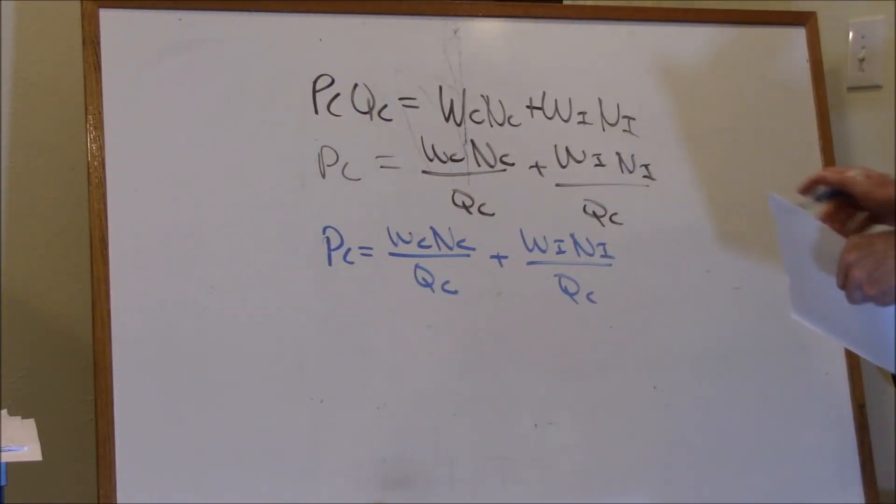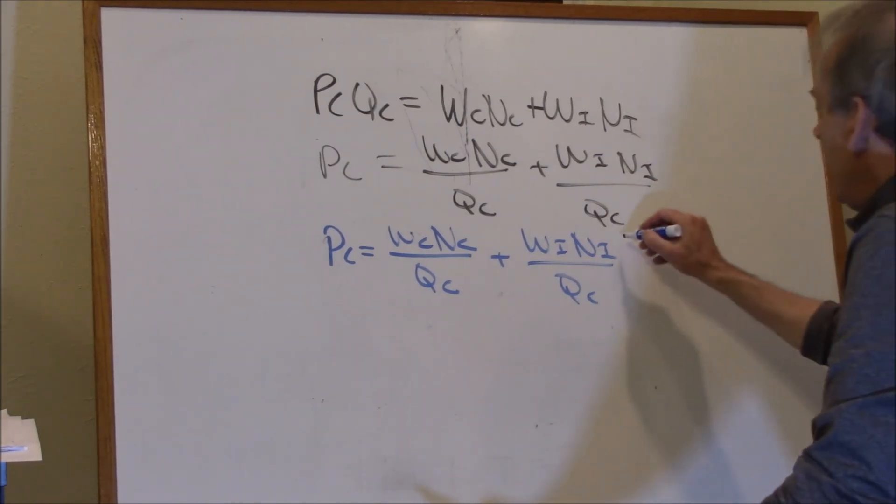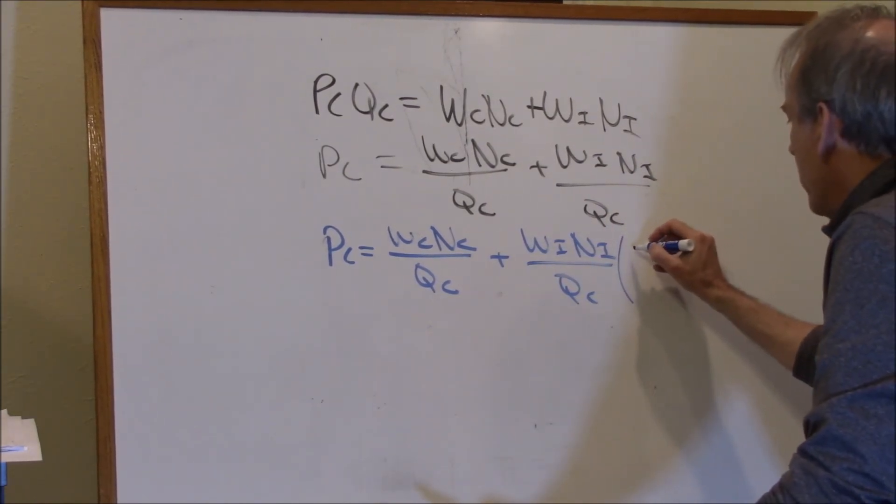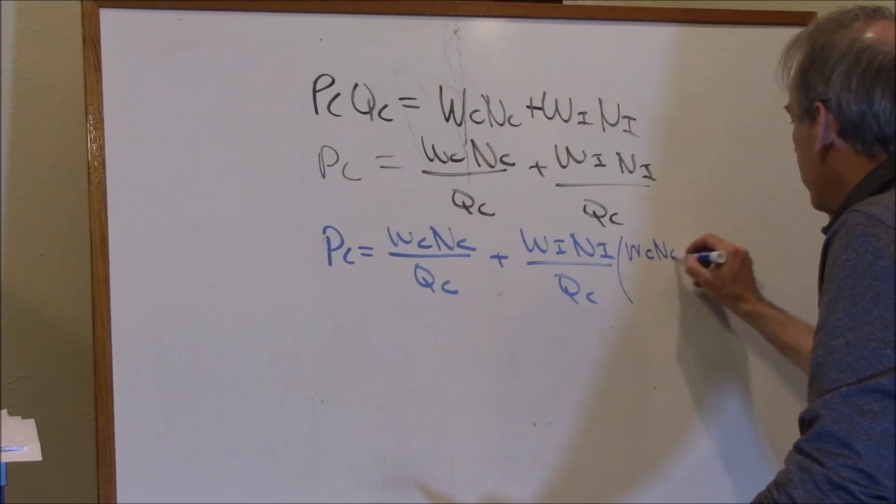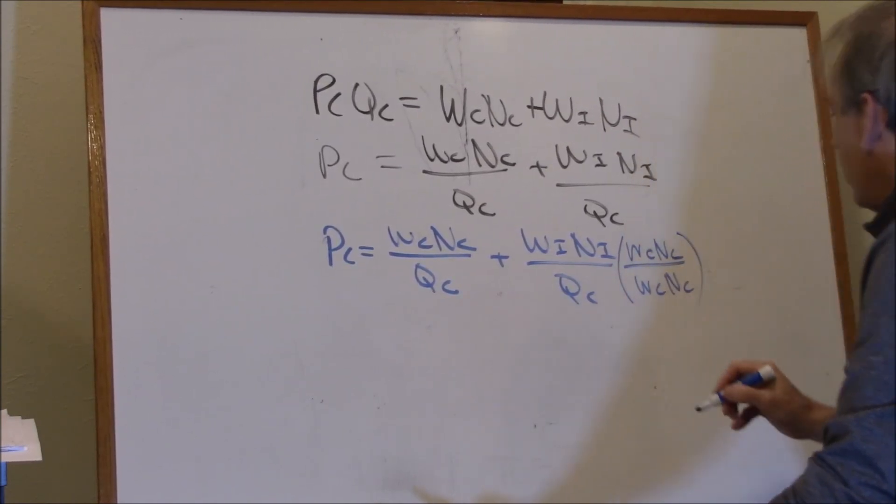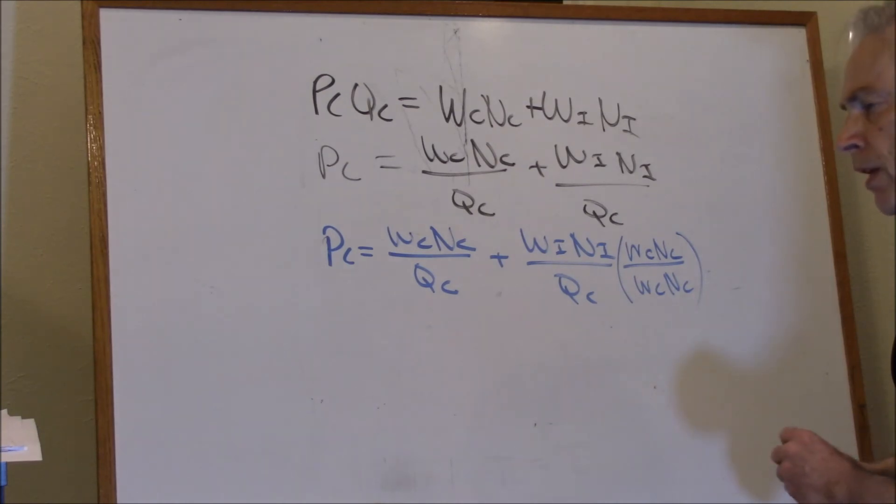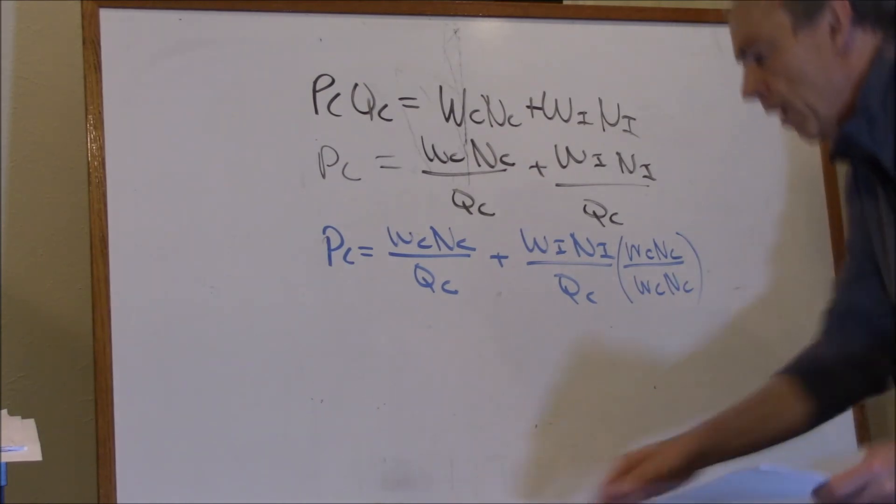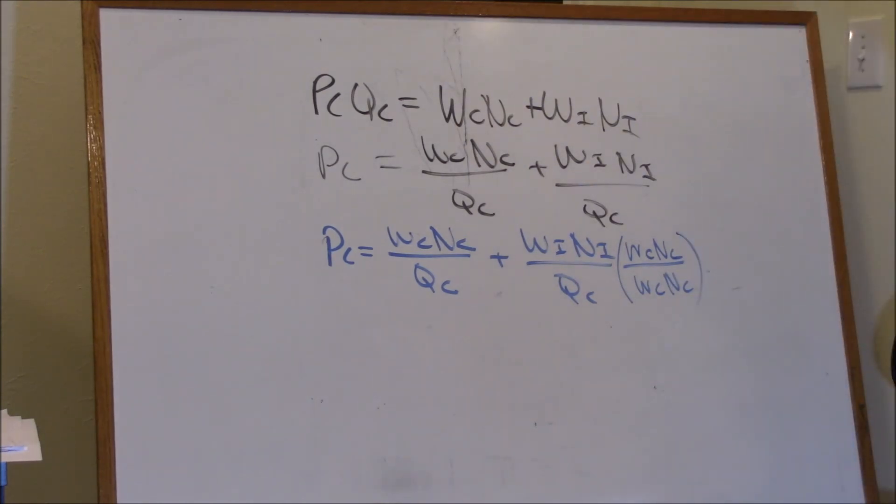Now, I want to multiply this, just this fraction here, by one. Now, for some reason, he's ringing the back door bell to go out when in fact he can go out this door. All right. Anyway, he'll figure it out. So, multiply it by one. Pardon me.